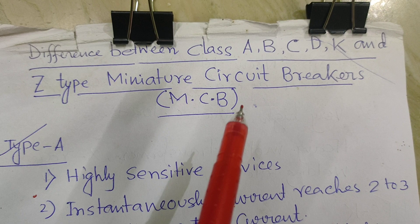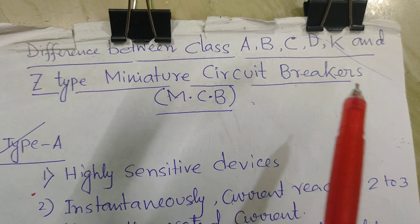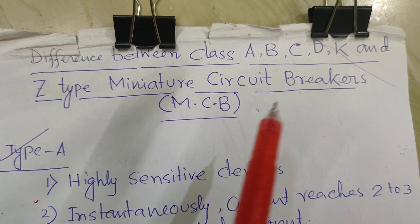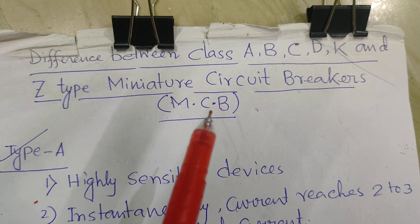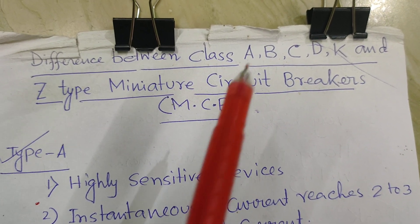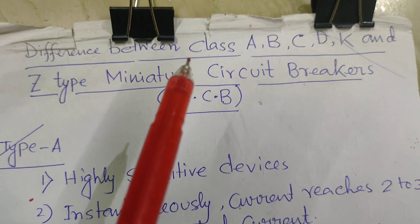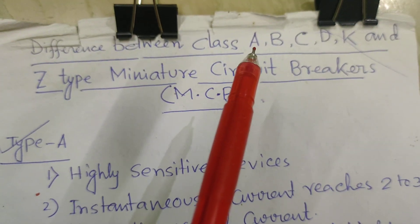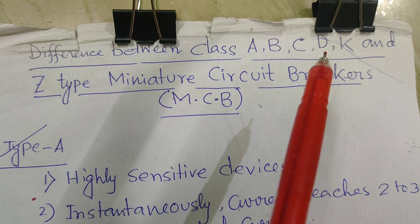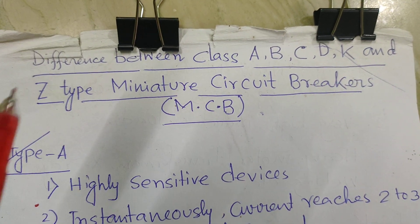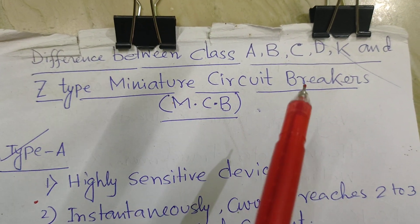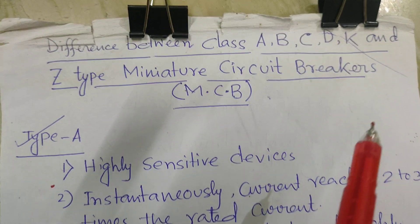What is the full form of MCB? It is a miniature circuit breaker. It is also break a circuit, so it is called circuit breaker. Different classes or different types of MCBs are A-type, B-type, C-type, D-type, K-type and Z-type miniature circuit breaker.